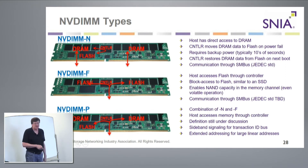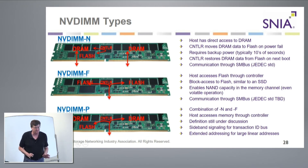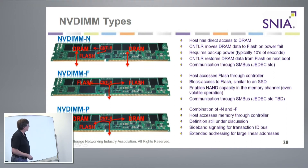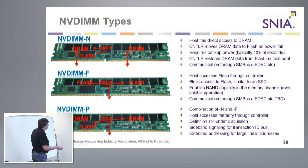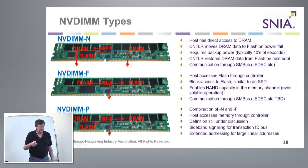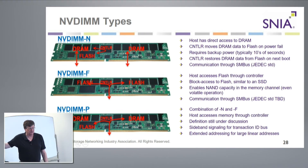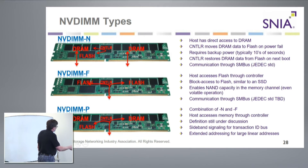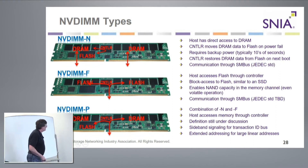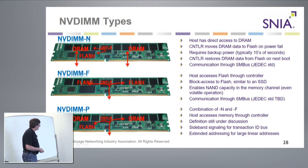NVDIMM-F, on the other hand, is all flash — hence the dash-F — all persistent, no DRAM. What you're basically getting, similar to an SSD, is block access to flash, and that flash happens to sit in a memory channel. So it avoids the latency of a PCI Express bus. There are some companies, although not as many as are doing the dash-N, that are doing this kind of stuff. It's all been JEDEC standardized, so it enables NAND capacity in the memory channel.